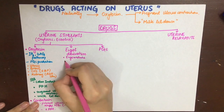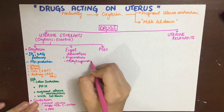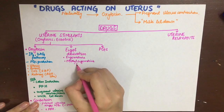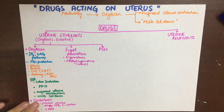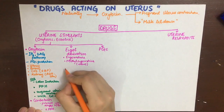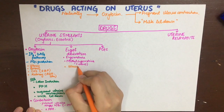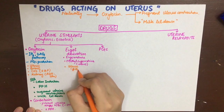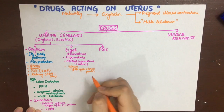The next uterine stimulants are ergot derivatives. Ergot is a poisonous fungus that causes smooth muscle contraction. Ergometrine is a natural alkaloid of the fungus, while methylergometrine is a semi-synthetic derivative with more potent action on the uterus. They act on both the upper and lower segments of the uterus, so they are not as helpful in induction of labor.